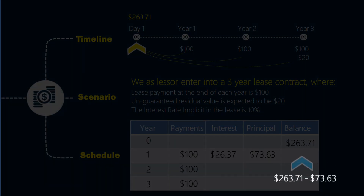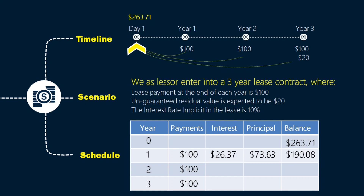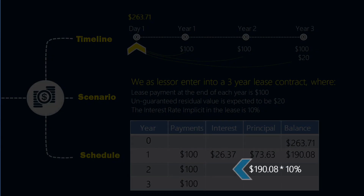If from our receivable of $263.71, $73.63 has been repaid, the new balance at the end of year one will be $190.08. We repeat the same process for the next year, except the computation of interest for the second year is based on the new opening balance — 10% of $190.08, which is $19.01.